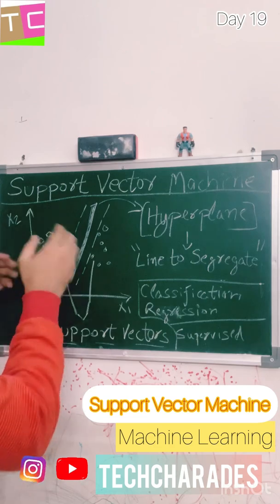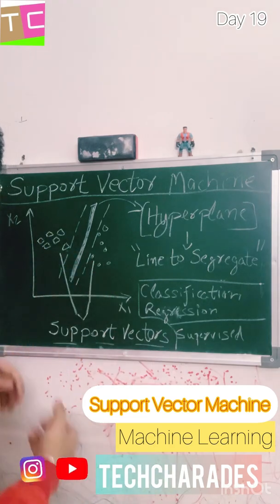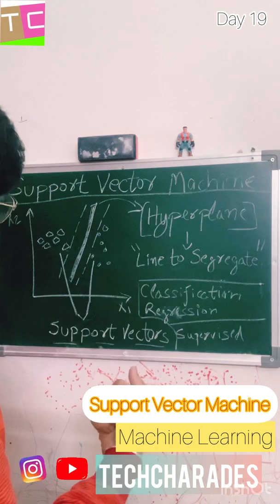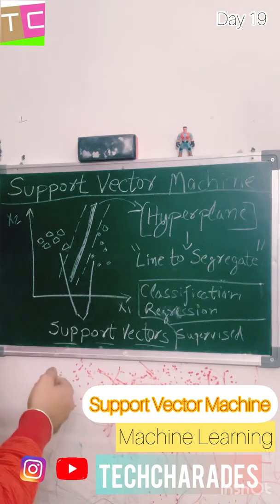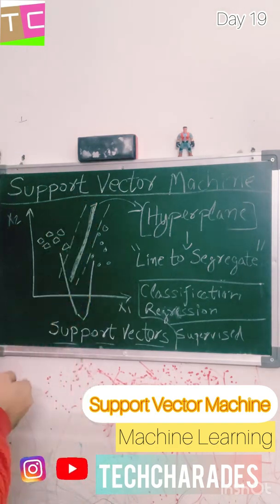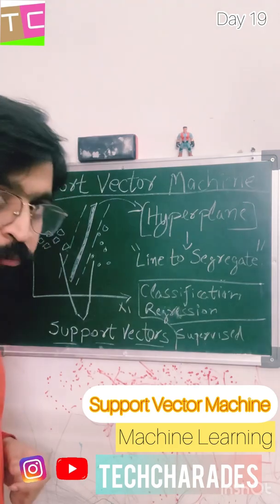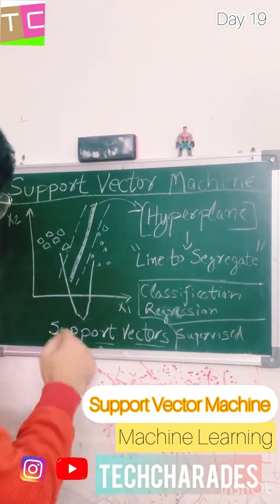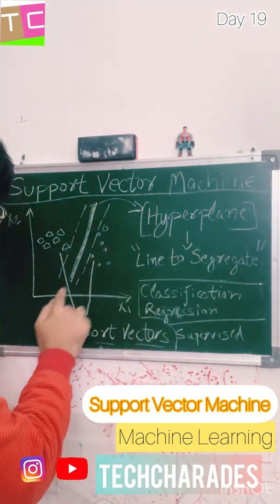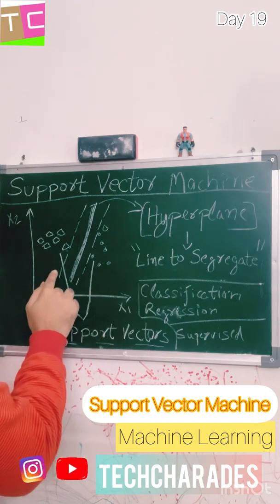What we want is to classify these into two categories. We need to find a best-fit line — this line, or the decision boundary — to classify them. This best-fit line is called a hyperplane. The two dotted lines are called the negative and positive hyperplanes.